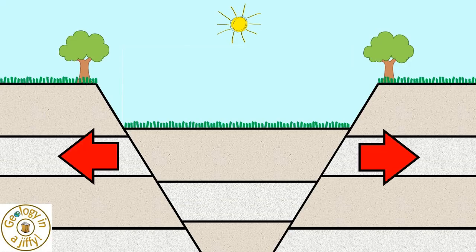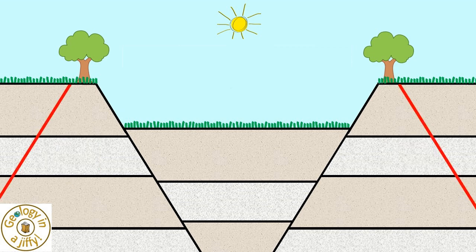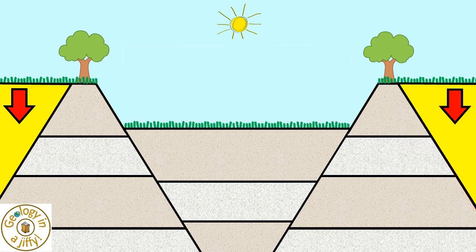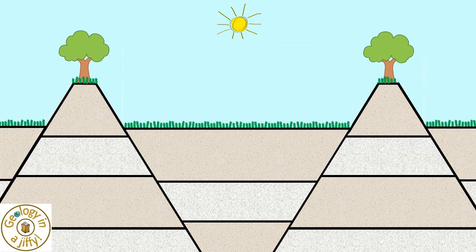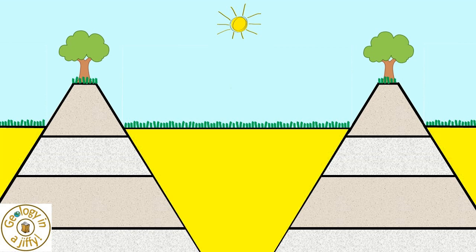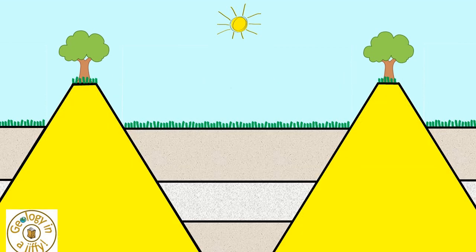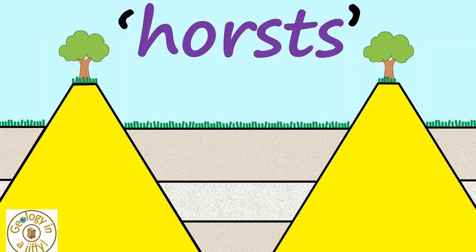Alternatively, during extension, the normal faults may not form in the same parallel orientation, so with further extension we have a series of parallel grabens form. The raised blocks between the grabens are called Horsts.